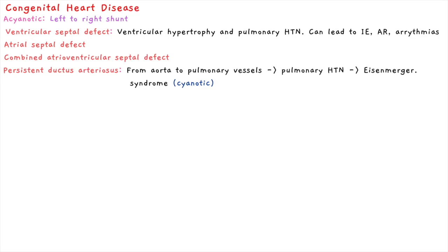In acyanotic heart disease the patient will not be blue, but in cyanotic heart disease the patient will be blue, and this is commonly due to a right-to-left shunt. Remember, blood normally does not move from low pressure to high pressure, so there must be structural abnormalities in the heart leading to this blood movement.